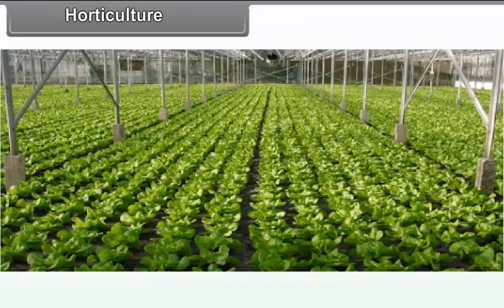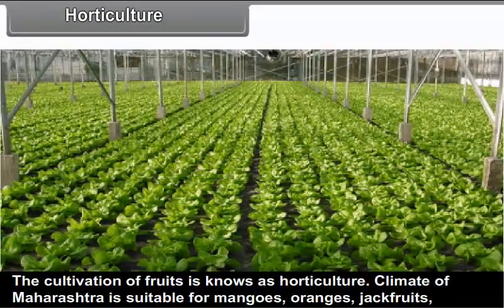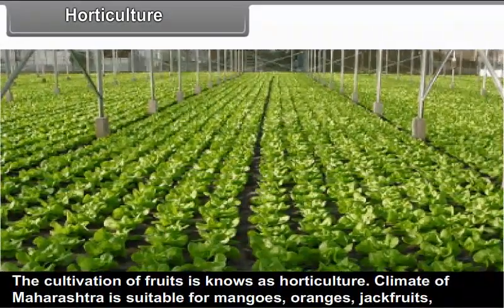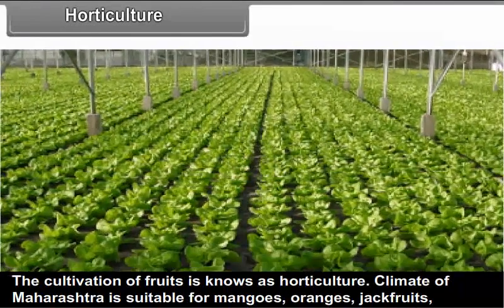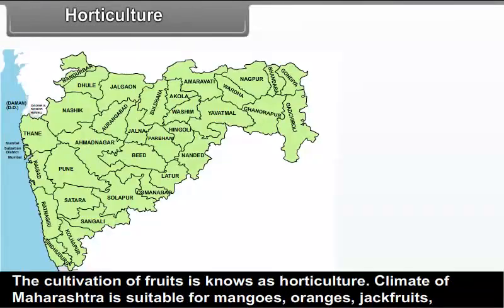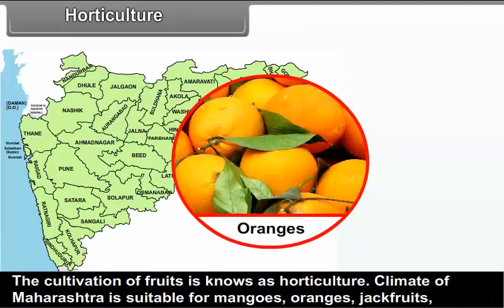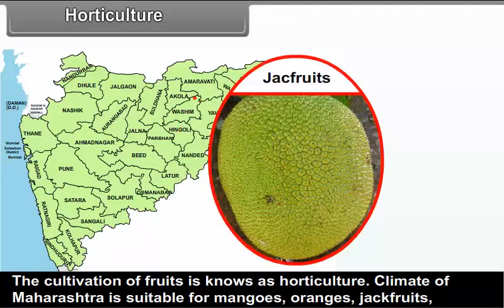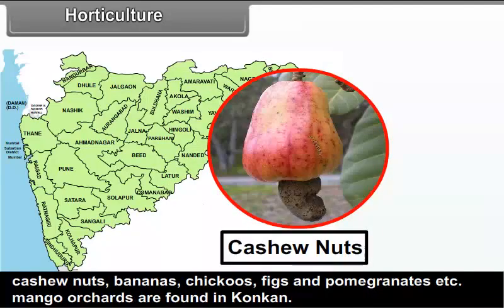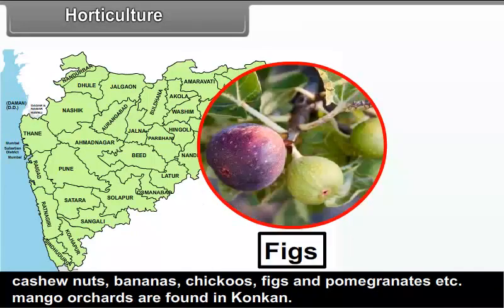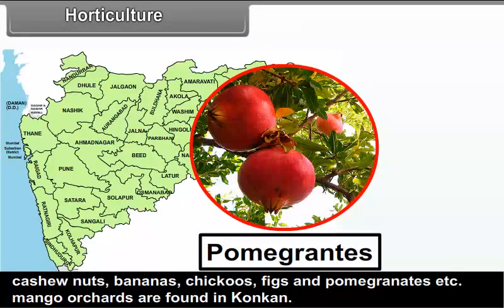Horticulture: The cultivation of fruits is known as horticulture. The climate of Maharashtra is suitable for mangoes, oranges, jackfruits, cashew nuts, bananas, chikus, figs, and pomegranates.